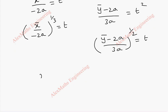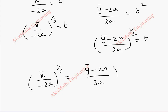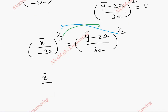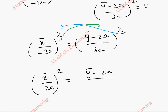Now we equate both expressions for t: (x̄ / (minus 2a))^(1/3) equals ((ȳ minus 2a) / 3a)^(1/2). Cubing the left side goes to the right as a cube, and squaring the right side goes to the left as a square, giving (x̄ / (minus 2a))² equal to ((ȳ minus 2a) / 3a)³.